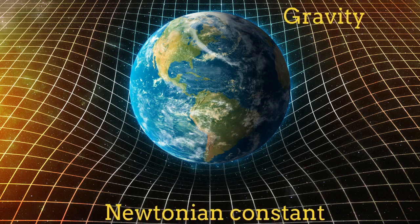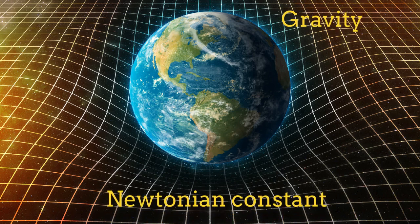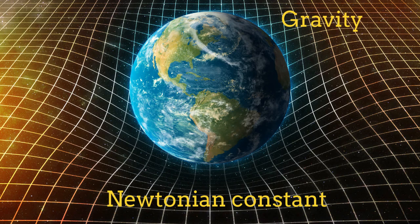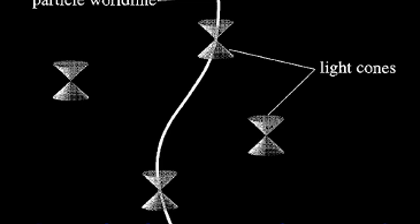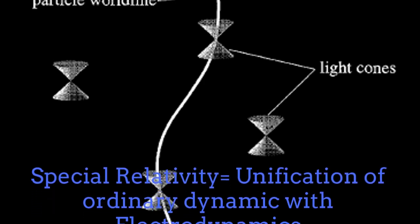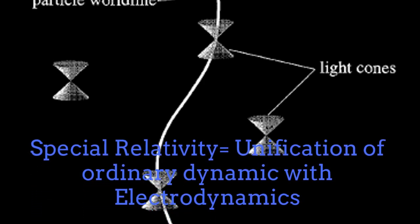The Newtonian constant comes naturally from gravity. The theory of gravity is general relativity, which includes the Newtonian gravity as a weak field gravitational regime. Additionally, the constant corresponding to the speed of light emerges originally from electrodynamics, namely the theory of Maxwell. Subsequently, it also appears as a key ingredient inside the theory of special relativity. In fact, special relativity is just a unification of electrodynamics with ordinary dynamics.